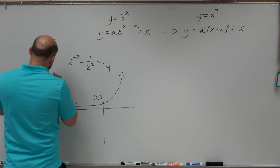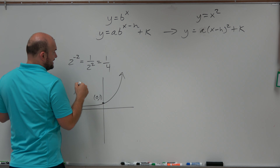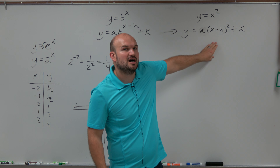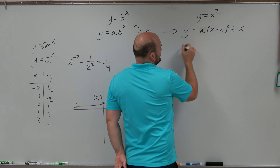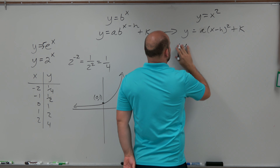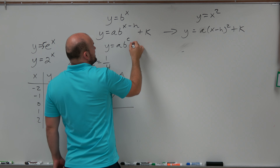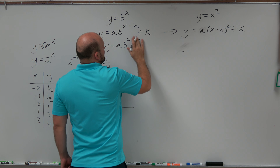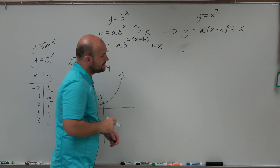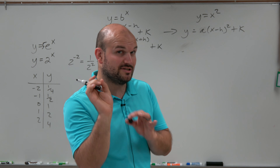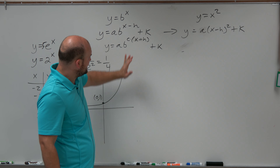As this graph continues going to the left, it's going to get smaller and smaller fractions — basically approaching 0. It will never go negative, because even a very large negative exponent just gives a very small fraction, but it's never actually 0. For example, 2 to the negative one-millionth power is really, really close to 0, but not 0. As values get larger, this graph increases very fast.